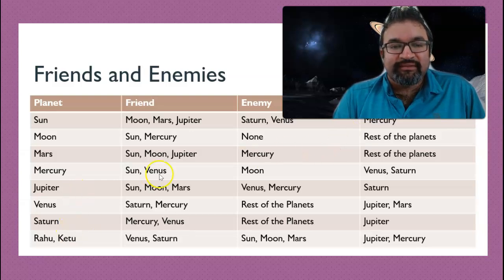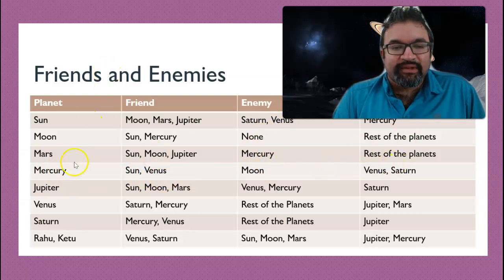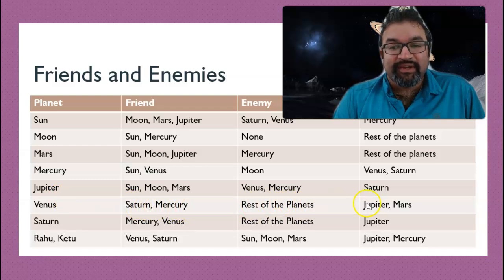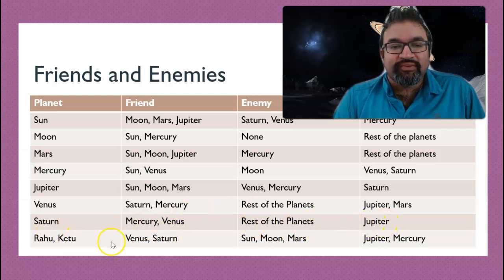For Mars, the friends are Sun, Moon, and Jupiter; the enemy is Mercury; and the rest of the planets are neutral. Mercury's friends are Sun and Venus; the enemy is Moon; and neutral are Venus and Saturn. Jupiter's friends are Sun, Moon, and Mars; enemies are Venus and Mercury; and neutral is Saturn. For Venus, the friends are Saturn and Mercury; enemies are the rest of the planets; and neutral are Jupiter and Mars. Saturn's friends are Mercury and Venus; enemies are the rest of the planets; and Jupiter is neutral. For Rahu and Ketu, the friends are Venus and Saturn; enemies are Sun, Moon, and Mars; and neutral are Jupiter and Mercury.